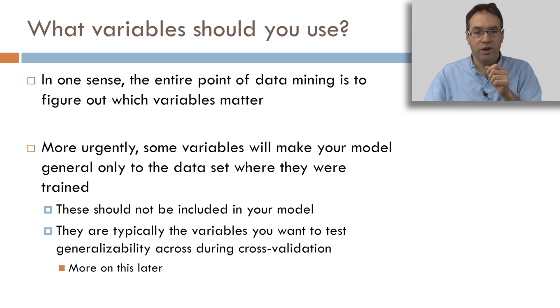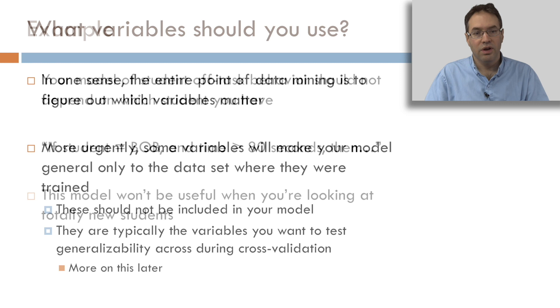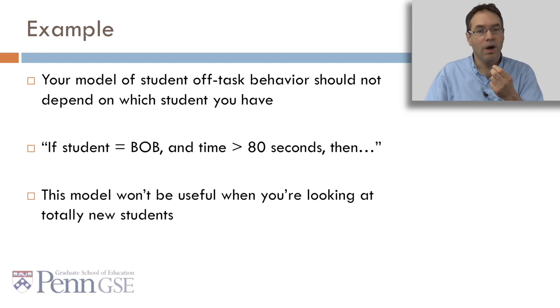More urgently, some variables are going to make your model general only to the dataset where the model was trained. And these kind of variables should not be included in your model. These are typically the variables you want to test generalizability across during cross-validation. To give a quick example, your model of student off-task behavior should not depend on what student you have. It shouldn't say, if the student's Bob and the time is more than 80 seconds, then do this. Because this model is not going to be useful when Bob's no longer part of your dataset and you're looking at totally new students.